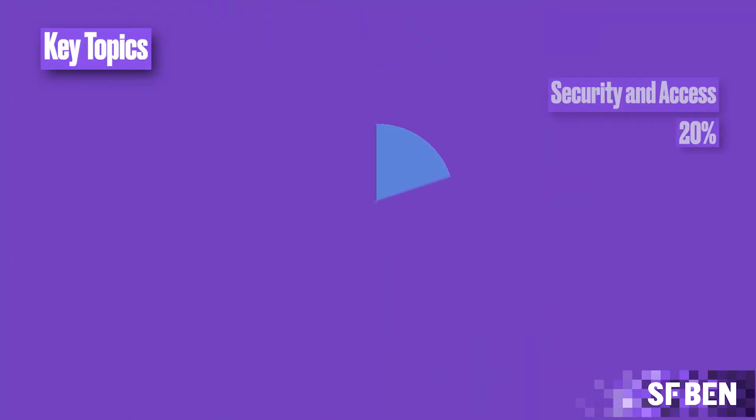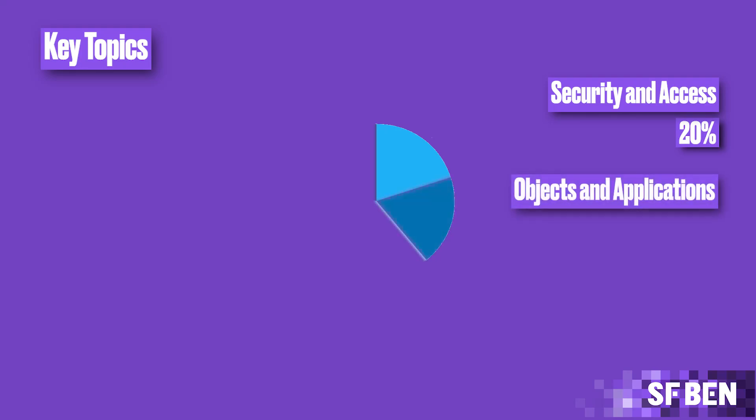For example, if a user has access to a record via sharing rules but their profile doesn't allow access to the object, then they won't be able to see the record. Next up, we have Objects and Applications, weighing in at 19%.